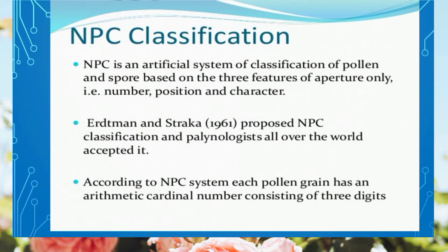What is the NPC classification system? It is an artificial system of classification of pollen and spore. Its basis is aperture features. This system was proposed by Erdtman and Straka, two scientists, in 1961. Due to its simplicity, all palynologists accepted this system.